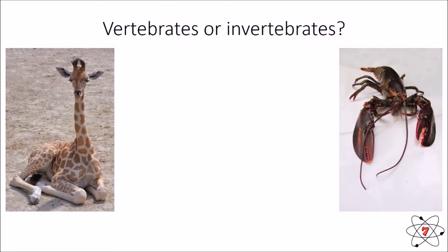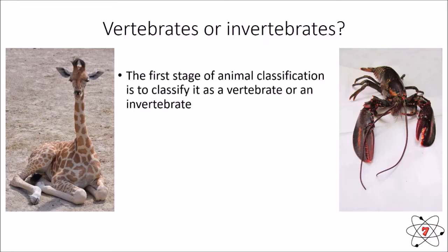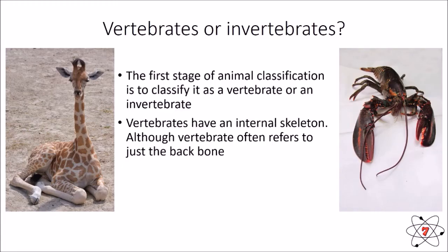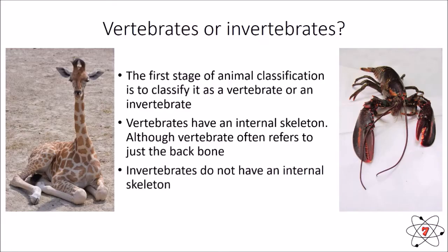The first stage of animal classification is to classify it as either a vertebrate or an invertebrate. Vertebrates are animals that have an internal skeleton — although generally the term vertebrate just refers to the backbone, any organism with an internal skeleton is called a vertebrate. Humans are vertebrates because we have a skeleton inside our body. Invertebrates do not have an internal skeleton. A giraffe is a classic example of a vertebrate — it has a skeleton inside of it. The lobster, on the other hand, does not have an internal skeleton; it has a hard outer shell. So the giraffe is a vertebrate and the lobster is an invertebrate.